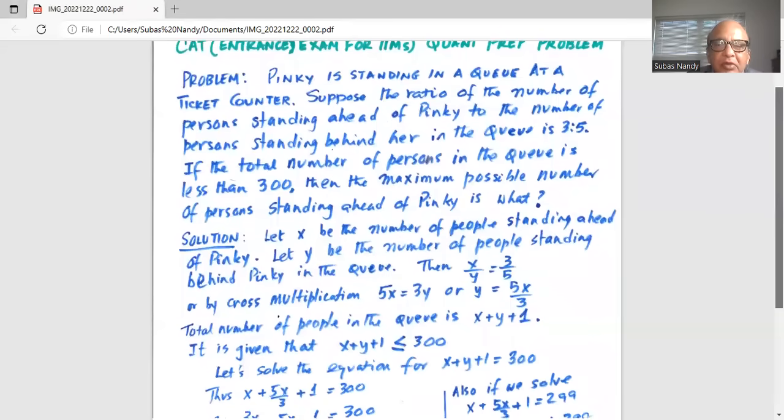Solution: let x be the number of people standing ahead of Pinky and let y be the number of people standing behind Pinky in the queue. Then x divided by y is equal to 3 divided by 5. Or by cross multiplication 5x is equal to 3y and then dividing by 3 on both sides we get y equal to 5x by 3.